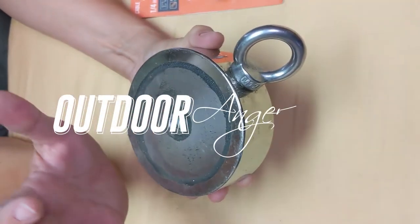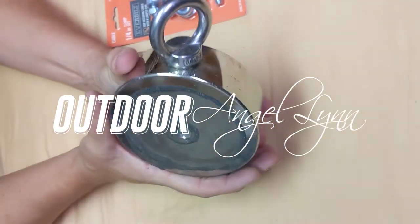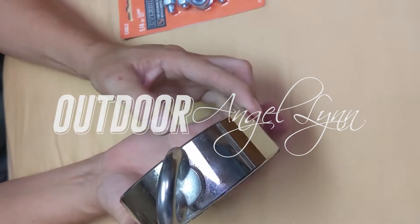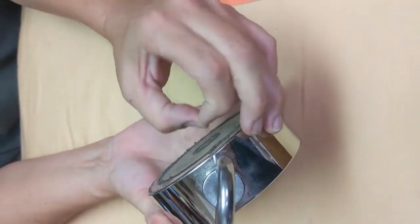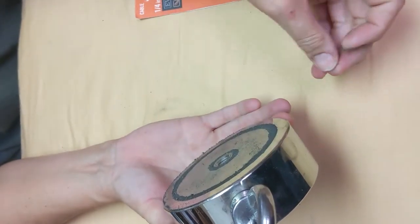Okay, so everybody, this is my birthday present that I got. It is a Brute Magnetics 20, oh look, I'm pulling something off, 2,600 pounds.